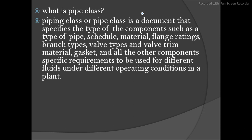What is a pipe class? Piping class or pipe class is a document that specifies the type of component — such as type of pipe, schedule, material, flange, ratings, branch types, wall types, wall frame, material, and all the component-specific requirements to be used for different fluids under different operating conditions in a plant. When the fluid changes, the material gets changed. For example, water and oil cannot use the same material, so we have to use different specifications.